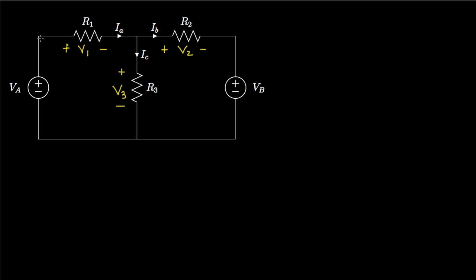Starting in one part of the circuit and proceeding around the first loop, we write down all voltage drops. Moving in this direction, we go from positive to negative, dropping by V1, then dropping by V3, then increasing — a negative drop — so we subtract VA and set the sum equal to zero. When we encounter a positive sign first on the reference voltage, we write it as a positive component; when we encounter the negative polarity first, we write it as negative.